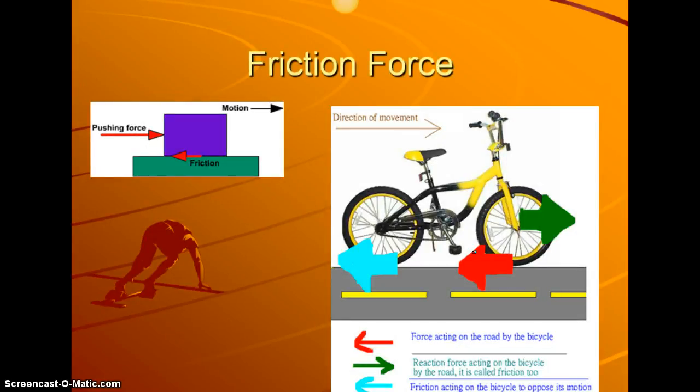And then friction force, to show some examples of that, friction works opposite of you pushing or pulling. So when you have two objects that are touching each other, friction opposes motion. So in this case with the bicycle, we have the force acting on the road by the bicycle in red. We have friction acting on the bicycle to oppose its motion. And that's what you have to overcome when you are riding a bike or running or doing any type of motion activity. You have to overcome these forces. And then green is the reaction force acting on the bicycle by the road.